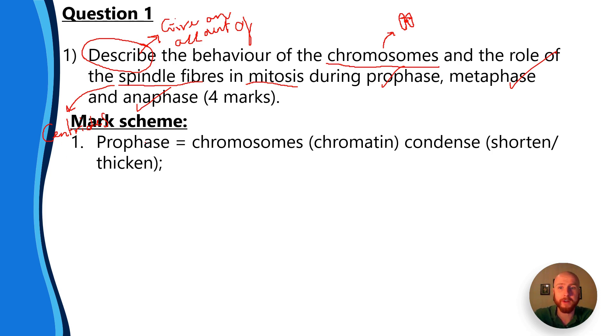So you'll get your first mark for saying that during prophase the chromosomes condense. Now you could also say that the chromatin condenses or the chromatin shortens or thickens, or you could even say the chromosomes shorten or thicken, but basically what you need to be talking about is that the chromosomes are forming those sausage-like visible chromosomes under the microscope. So brilliant, we're describing the behavior of the chromosomes there.